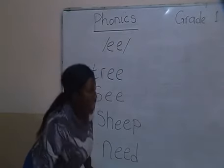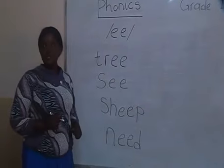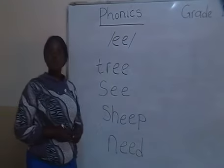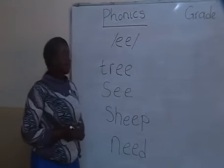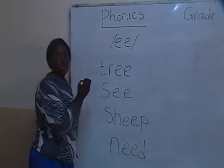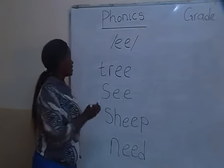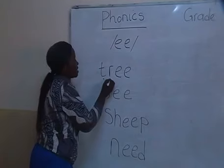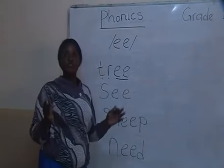So now, as usual, we are going to put the sound buttons. Remember, the sound buttons always help you to read the word. We are going to start with the first word. I put the sound button and we say the sounds together. Okay, we start. T — R — Ee. We squash. Tree.